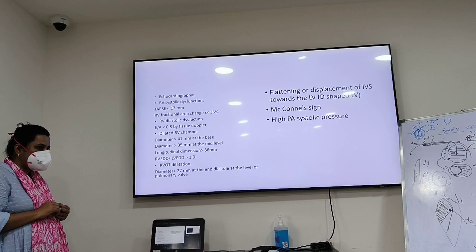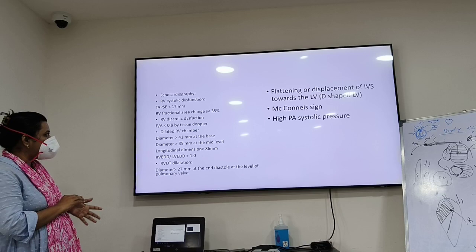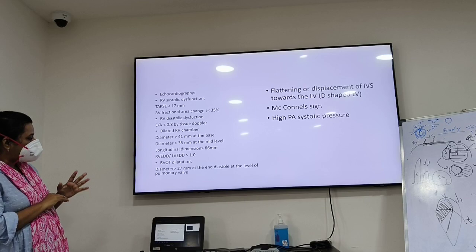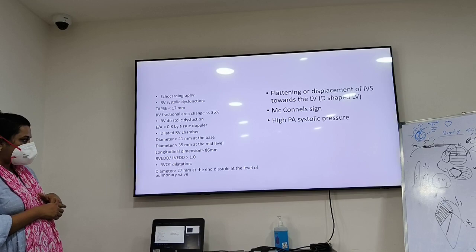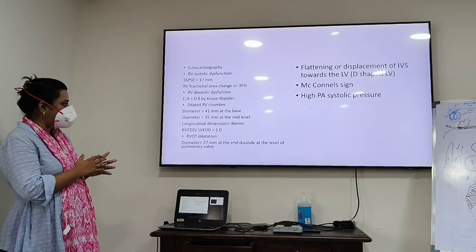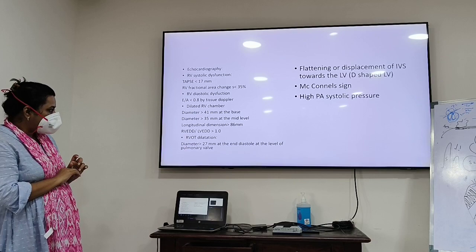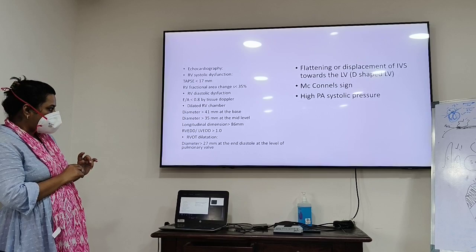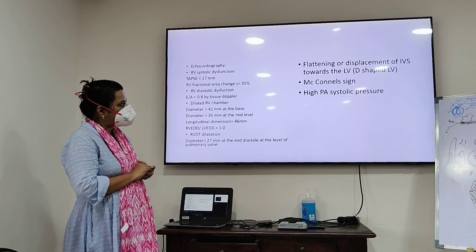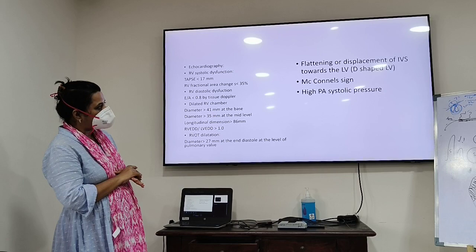RV diastolic dysfunction if E/A less than 0.8 by tissue Doppler. Dilated RV chamber: diameter of 41 mm at the base, 35 mm at mid-level, and longitudinal dimension more than 86 mm. RV/LV end-diastolic ratio more than 1. RV outflow tract dilatation if diameter more than 27 mm at end-diastole at the level of the pulmonary valve. Flattening or displacement of the interventricular septum towards the LV causing D-shaped left ventricle.